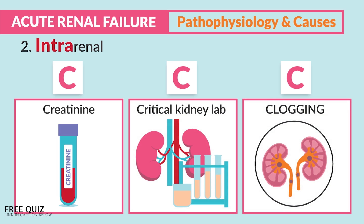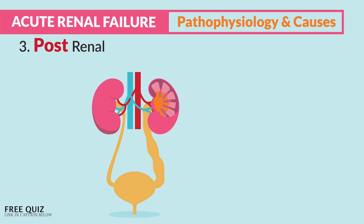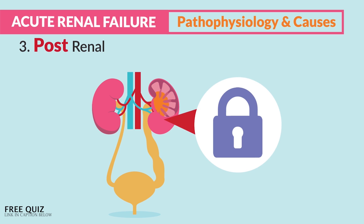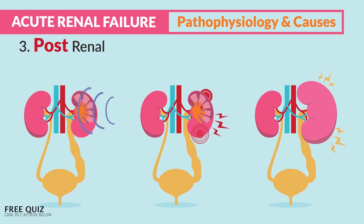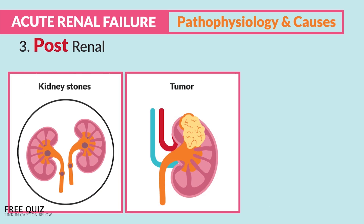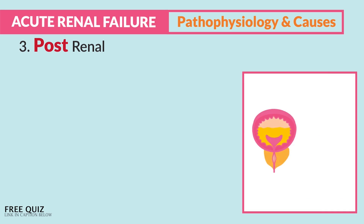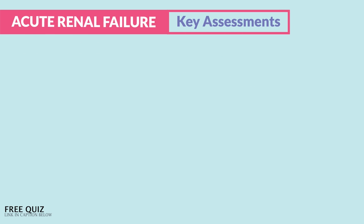Post-renal — think 'past the renals' — is a blockage after the kidneys that blocks outflow of urine. Urine can't get out of the kidney, causing pressure, pain, and strain on the renals. This is seen with renal calculi (kidney stones), tumors, or BPH — benign prostatic hyperplasia — a big swollen prostate in older men. Memory trick: BPH is a big prostate that holds back urine, creating an outflow problem.